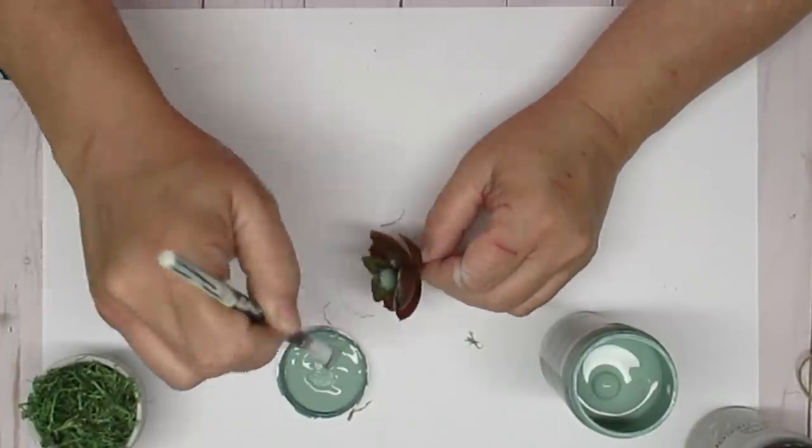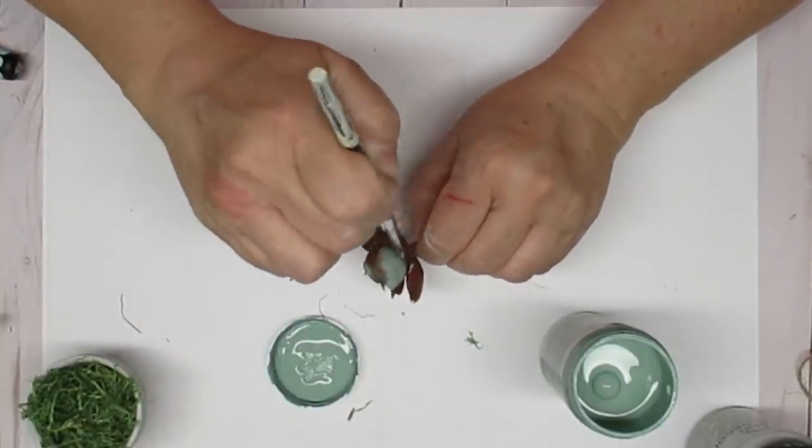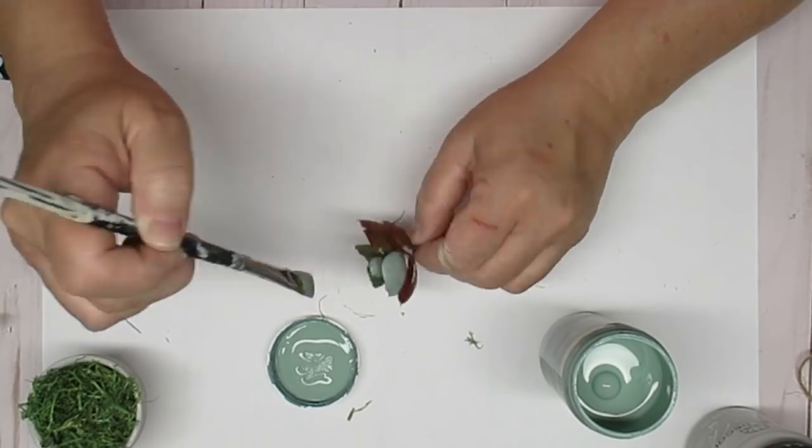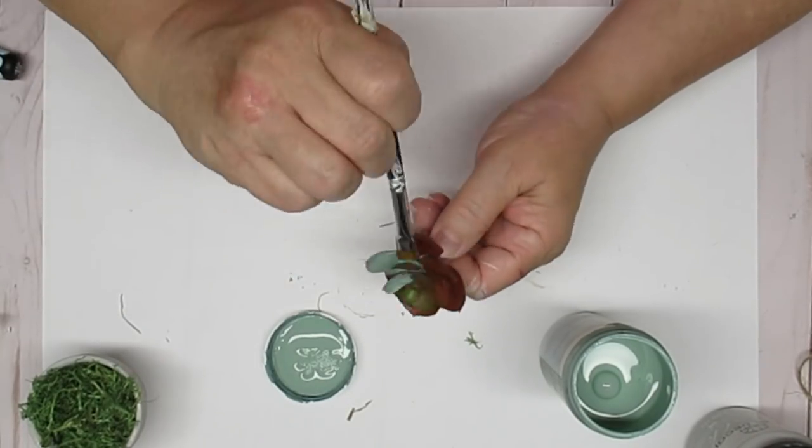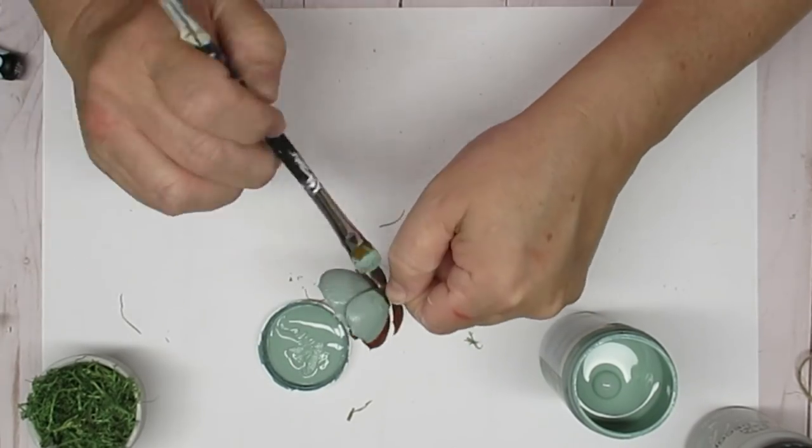So I'm taking the Martha Stewart vintage chalk paint in the color eucalyptus and I'm going to give them all just one coat. I want a little bit of that original color to peek through because that just gives them more texture and makes them look more lifelike.